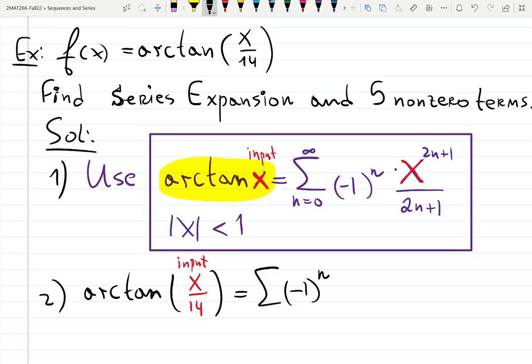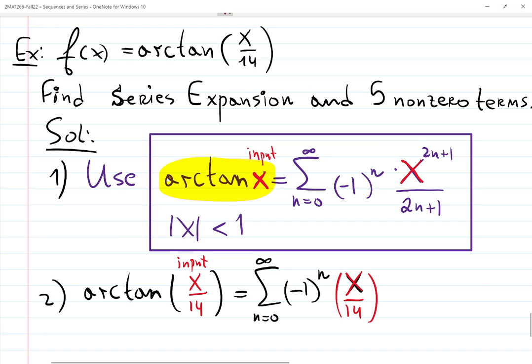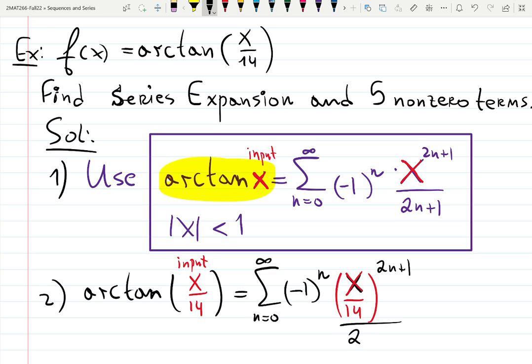Sum, minus 1 to the n. That means the series is alternating. Instead of x, I have x over 14, 2n plus 1 over 2n plus 1. Does this step make sense? We did not even do any factoring simplification. We just copy and paste. Using known formula.